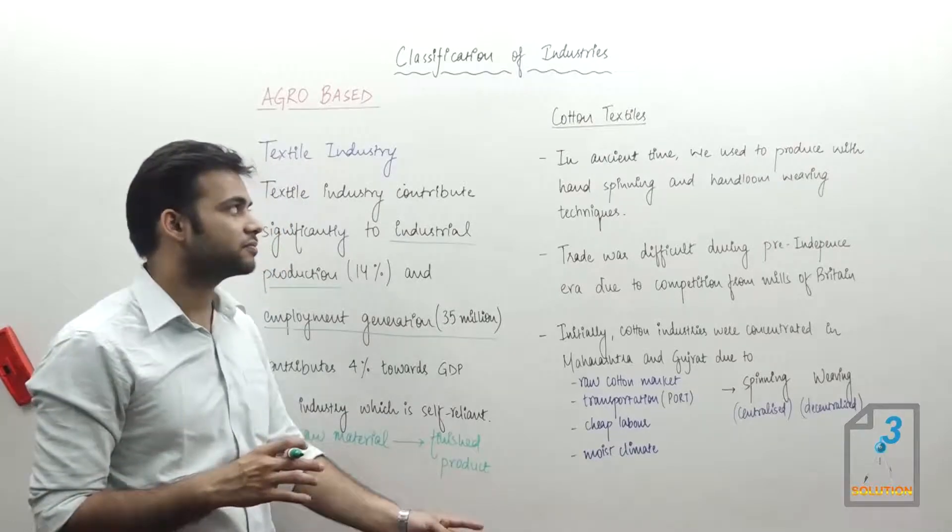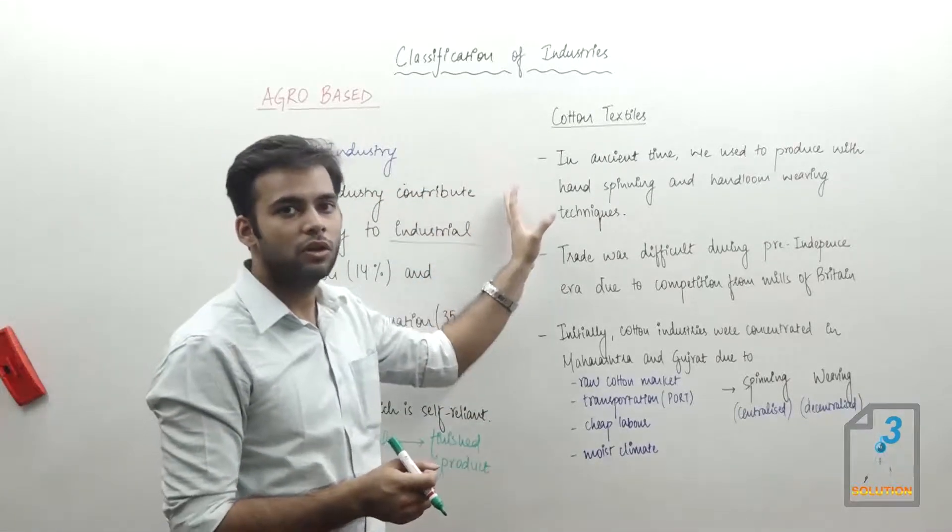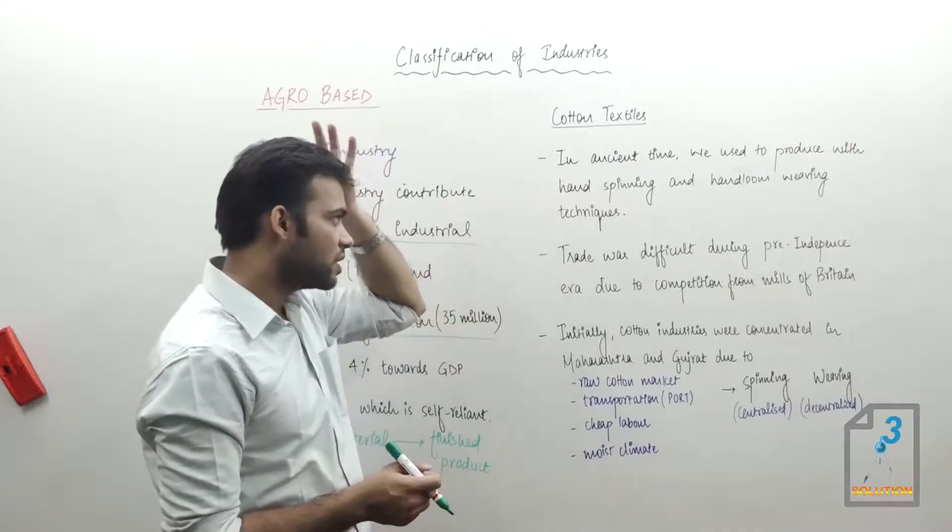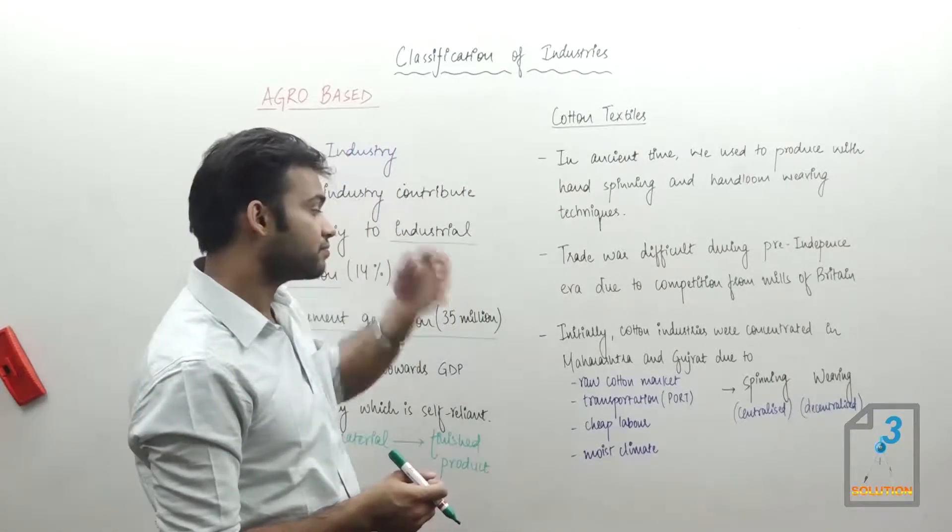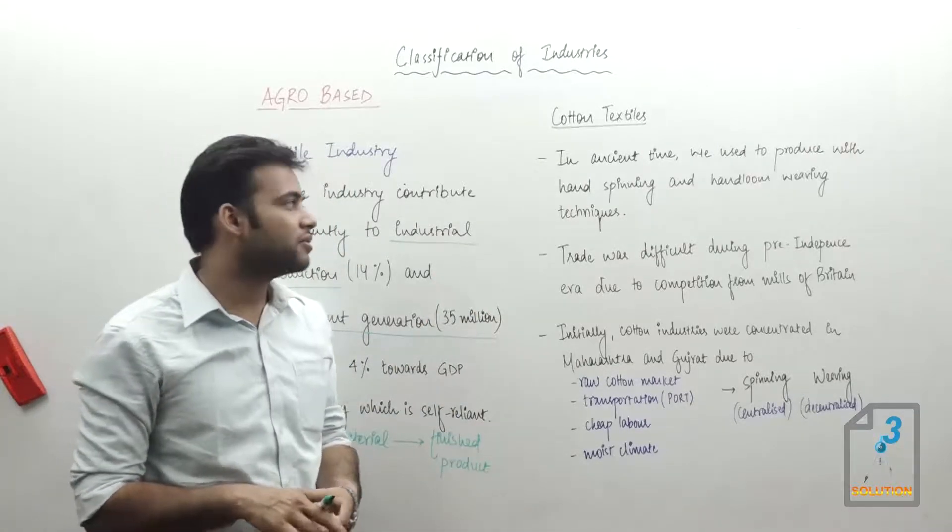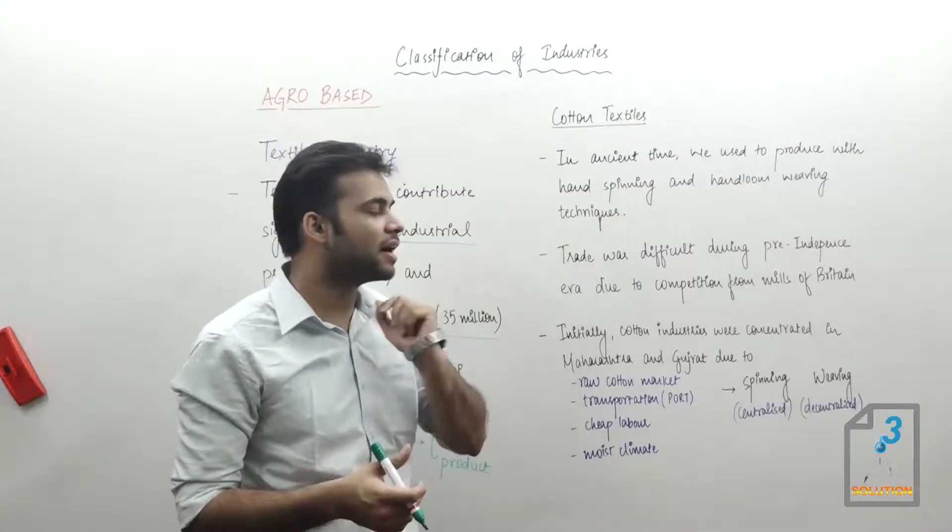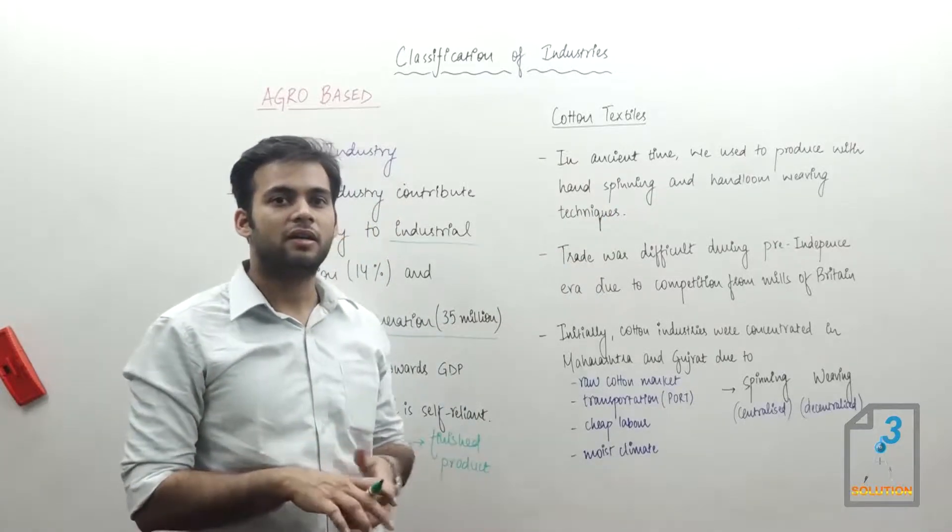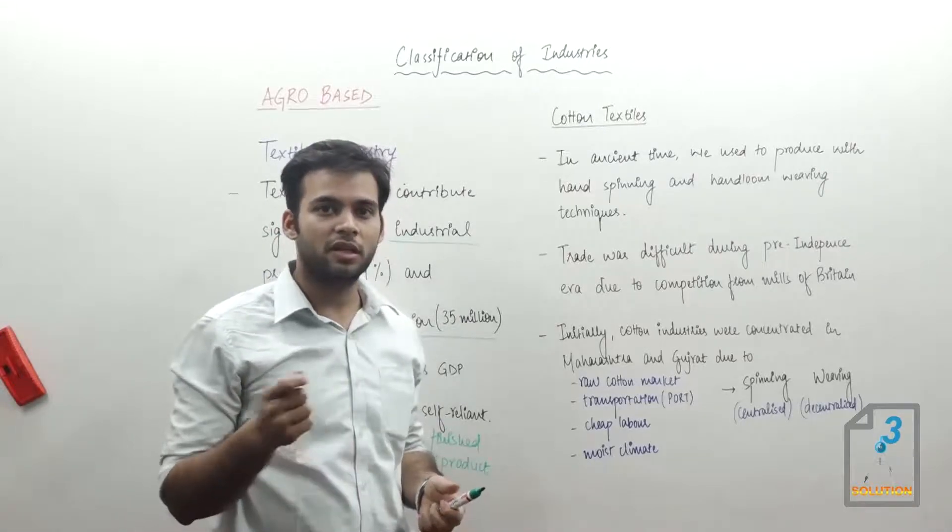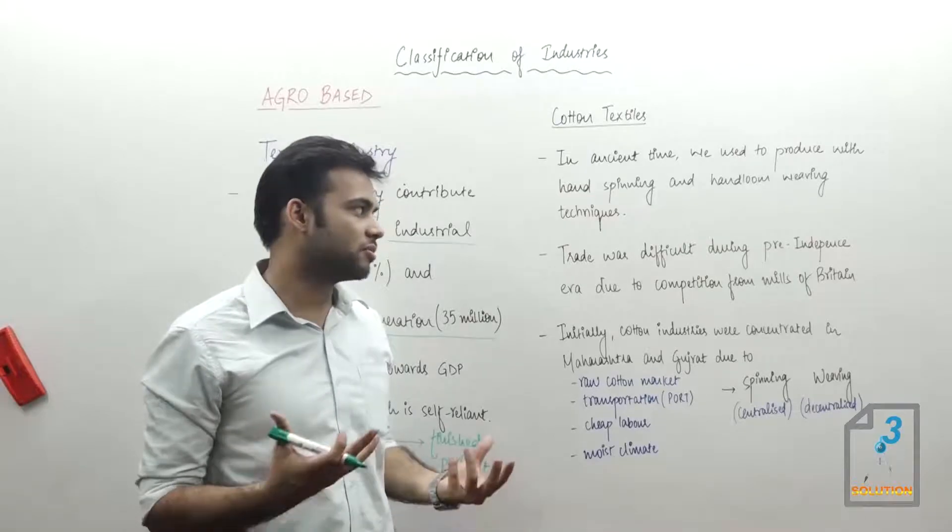Moving on to cotton textile. In ancient times, cotton was weaved using hand spinning and looms. You may have seen a picture of Mahatma Gandhi using charkha - that is hand spinning, meaning mechanical work was done by human beings.